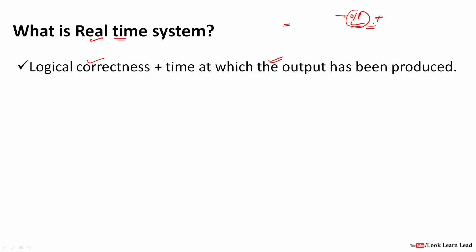But in a real-time system, both the output and the time at which the output is produced are important. There is a deadline within which the output must be produced. That is why we call a real-time system a time-critical system — the correct functioning depends on the results produced and the time at which those results are produced.